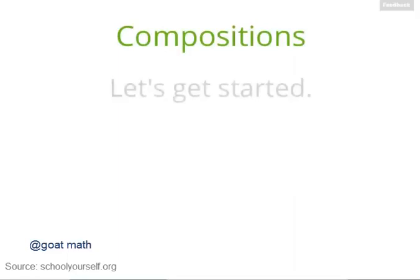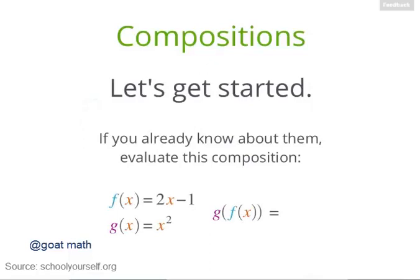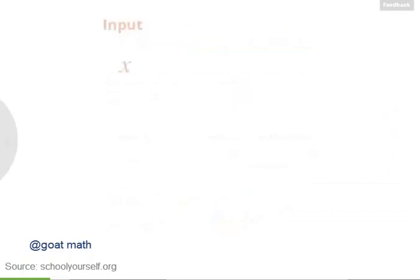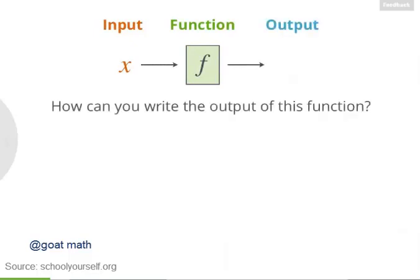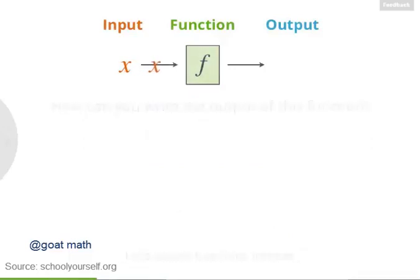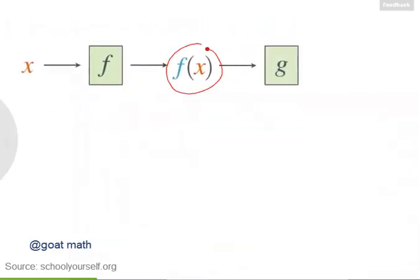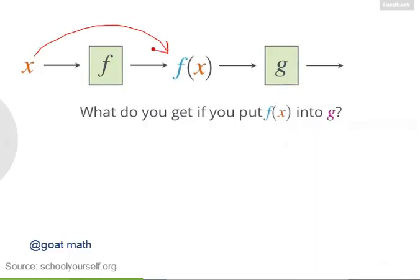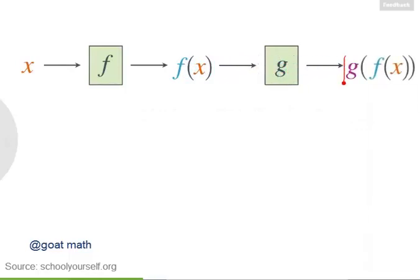Here we'll introduce compositions. If you're ready to learn about them, click here. If you already know how to compose functions, try simplifying this composition. Suppose you take an input x and put it into a function f — if you put the variable x into the function f, then you can write the output as f of x. Now let's suppose you take this output f of x and put it into another function g. How can you write the output of g in terms of g, f, and x? Just like putting x into f gives you f of x, putting f of x into g gives you g of f of x.